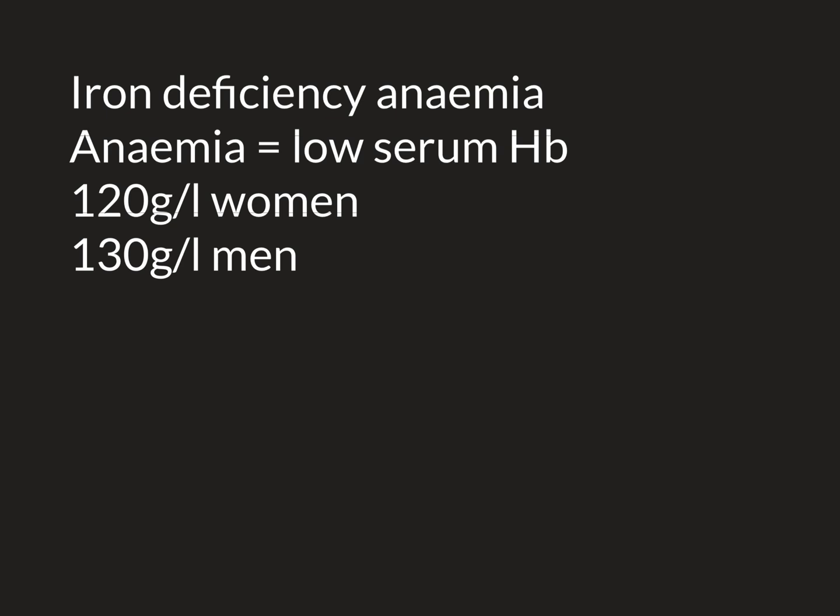When red blood cells expire and are destroyed, the iron recycled from their haemoglobin doesn't go directly back to the bone marrow. Instead it goes back into the body's iron stores, and then the bone marrow draws iron from those stores to create new red blood cells and new haemoglobin. So if the iron stores are gradually being depleted in this 30-year-old male, eventually the bone marrow won't receive enough iron to maintain an adequate haemoglobin concentration in the serum, and he will develop iron deficiency anaemia.